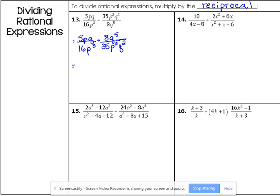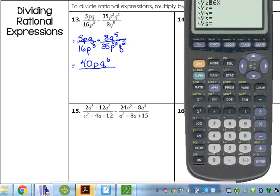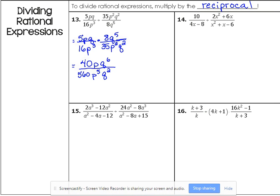So now, this is just what we were just doing. We multiply straight across the top, so 5 times 8 is 40. P, that's the only one we've got. Q times Q to the 5th is Q to the 6th. Be careful with your P's and Q's that you can tell the difference there. Okay, 16 times 35, don't need it right there, 16 times 35 is 560. Ooh, that's a big one. Okay, P cubed times P squared is P to the 5th, and we've got just Q squared.